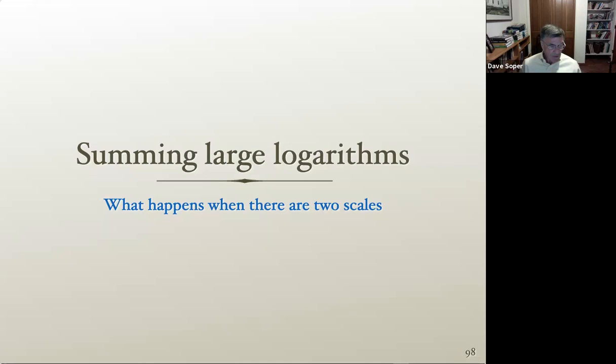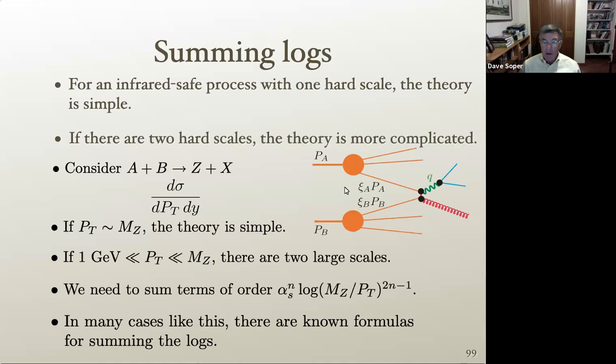Maybe we can have some discussion of that this evening in the discussion sessions. I would now like to turn to summing large logarithms. So what happens if there are two scales involved? If you have an infrared safe process with just one scale, the theory is quite simple — in principle the calculations are not so simple, but if there are two hard scales, things are more complicated.